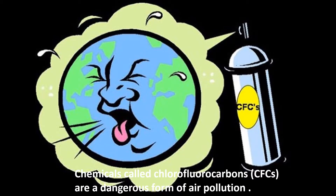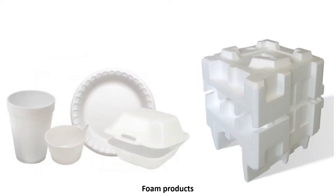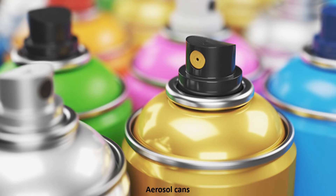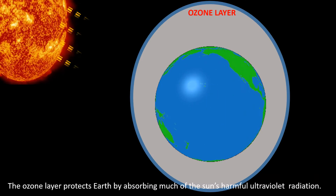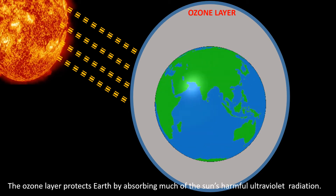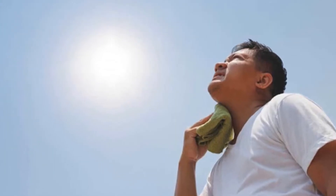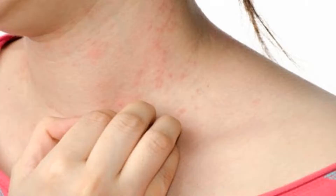Chemicals called chlorofluorocarbons (CFCs) are a dangerous form of air pollution. CFCs are found in gases that cool refrigerators, in foam products, and in aerosol cans. CFCs damage the ozone layer, a region in earth's upper atmosphere. The ozone layer protects earth by absorbing much of the sun's harmful ultraviolet radiation. When people are exposed to more ultraviolet radiation, they are more likely to develop skin cancer, eye diseases, and other illnesses.